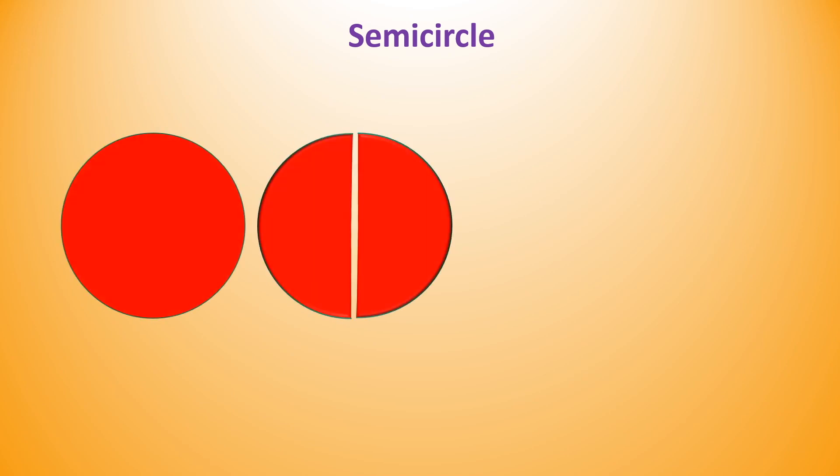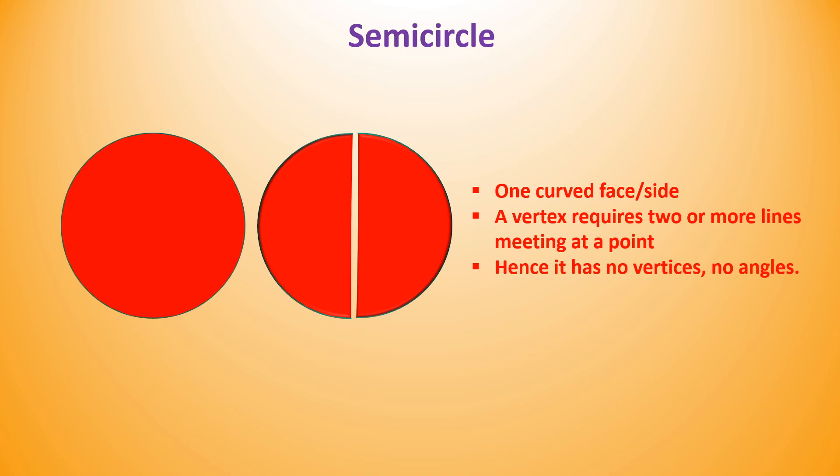Next 2D shape is semi-circle. When you cut a circle into two equal halves, each one is called as semi-circle. Semi-circle has one curved face and one side. A vertex requires two or more lines meeting at a point. Hence, just like circle, it has no vertices and no angles.